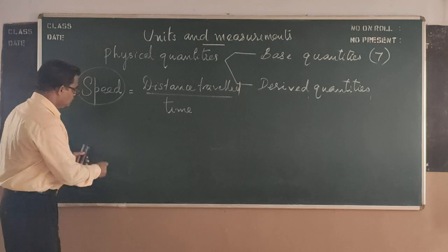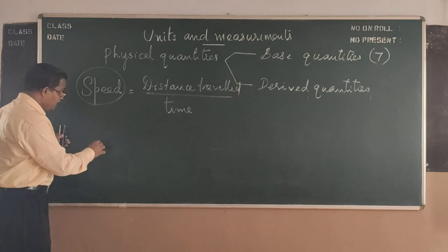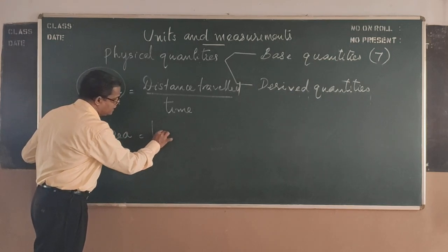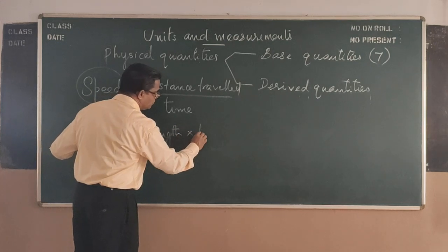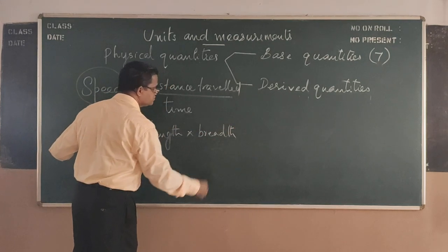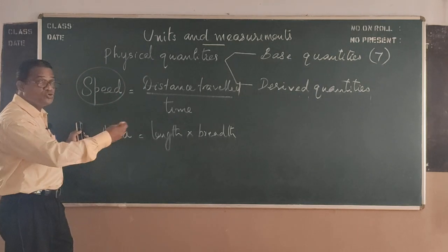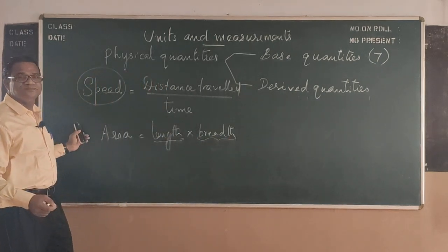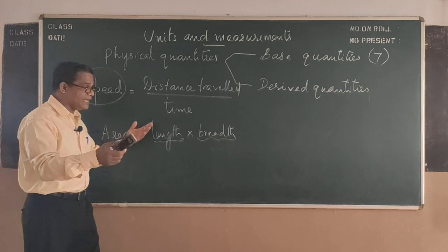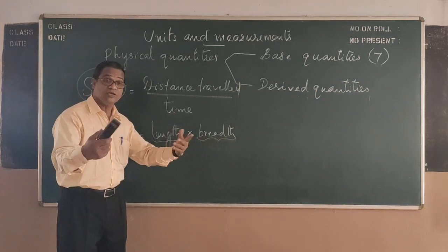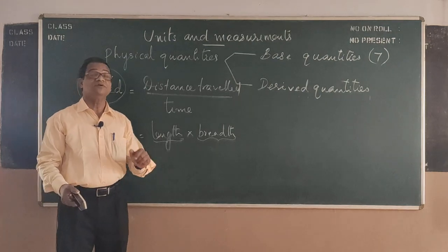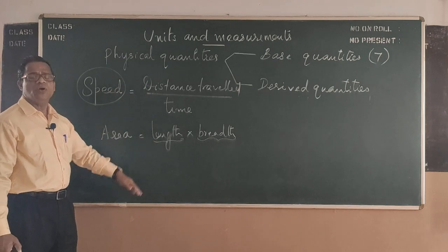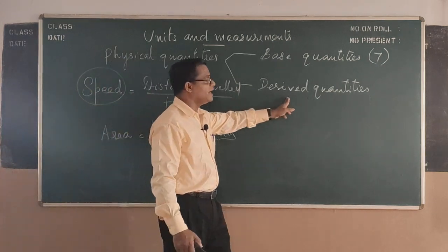Like that way you can see, for example area. Area of an object we call it as length into breadth. So length is one dimension, breadth also is a length. When you have two lengths, one greater than the other, the greater one we call it as length of the body and the lesser one we call it as breadth. So like this you can see many quantities under the heading derived quantities.